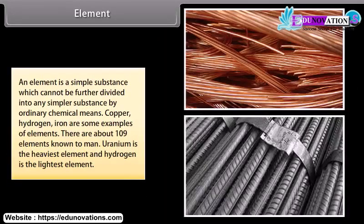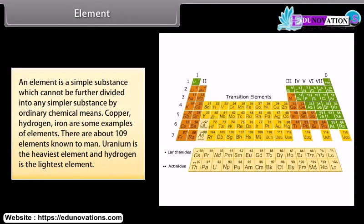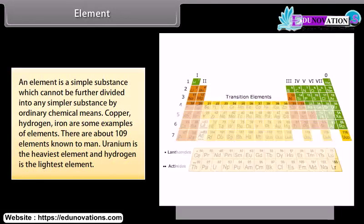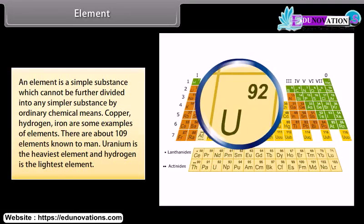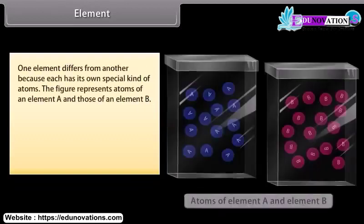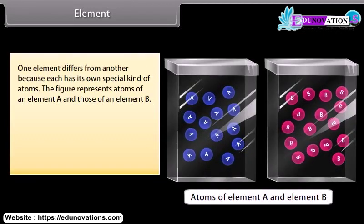An element is a simple substance which cannot be further divided into any simpler substance by ordinary chemical means. Copper, hydrogen, and iron are some examples of elements. There are about 109 elements known to mankind. Uranium is the heaviest element and hydrogen is the lightest element.